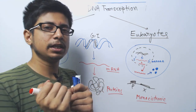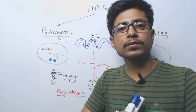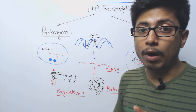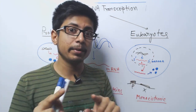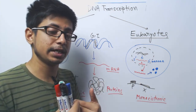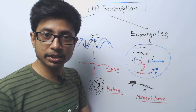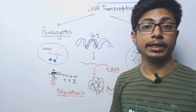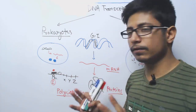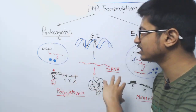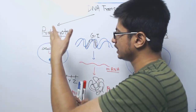Looking at the first difference: in the prokaryotic cell, the process of transcription takes place in the cytosol, while in the eukaryotic cell it takes place in the nucleus. In eukaryotes we have a nucleus — a membrane-bound organelle — where DNA is present, DNA replication takes place, transcription takes place, and RNA modification takes place. In prokaryotes there is no nucleus, so everything works in the cytosol itself. The genetic material DNA is floating in the cytosol, so both transcription and translation occur in the cytosol.